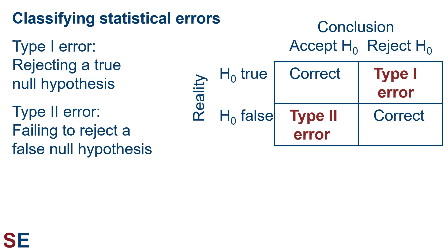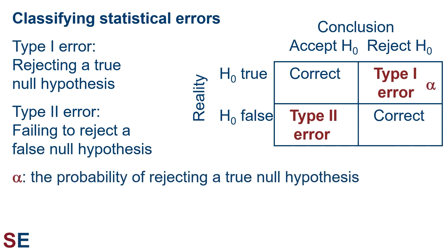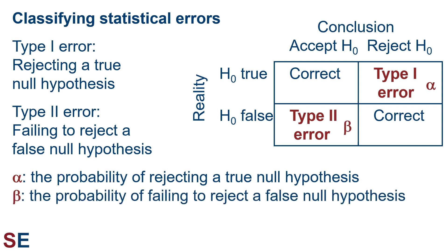The Stats Examples channel and website have a whole other video that goes into this in more detail. Check that out if you're not 100% sure of what these two distinct types of errors are and what they represent. When doing statistics, we typically focus on the value alpha, which is the probability of rejecting a true null hypothesis. Choosing the alpha value for our test is a standard practice done all the time. Less commonly, we can think about beta.